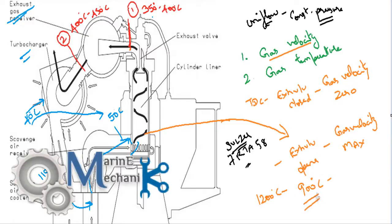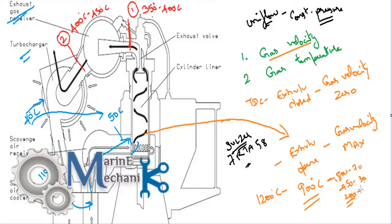We know combustion temperature is around 1200 degrees Celsius. As the exhaust valve opens the temperature is 900 degrees Celsius, and due to expansion it drops. As the piston uncovers the scavenged port, it drops to around 800, 700, 450, 300, 200, and almost equal to the scavenged air temperature of about 50 degrees. The average temperature reaches somewhere around 200 to 250 degrees, and the exhaust temperature doesn't go below 300 or 250 — that's the minimum reached within the combustion chamber.